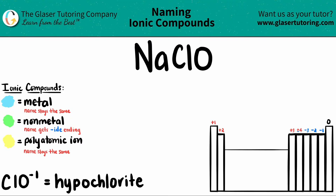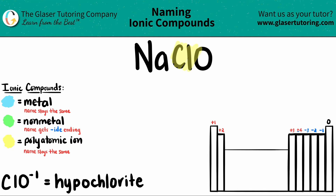I wrote it down here for you guys. This is one that you have to memorize. Whenever you see ClO, that is a polyatomic ion — that's hypochlorite. So if ClO is the polyatomic ion, that means sodium is a metal, because ionic compounds are metals plus non-metal or a polyatomic.